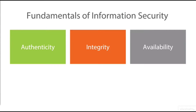Next, we want to look at availability. When it comes to availability, typically in the IT world we think of high availability — for example, redundant power supplies, a RAID of some type for hard drives, or a cluster of servers so if one fails, another picks up. That's not really the availability we're talking about here. When it comes to information security, we need to make sure that people can get to their data and are not being denied access to that data.